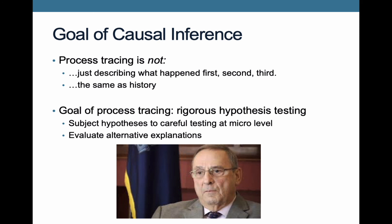The main takeaway with process tracing is that while we may only be looking at one, two, or a few cases, the ultimate goal is in many ways similar to what we do with a large-N study: we ultimately want to establish causality, but we're doing it with slightly different tools to try to get to a similar end point.